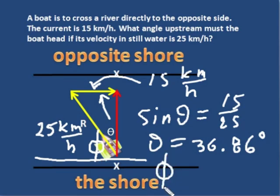And so phi is 90 minus the theta and we end up with 53 degrees. We head 53 degrees from the shore.